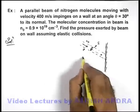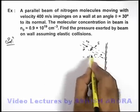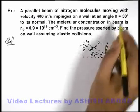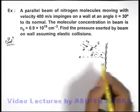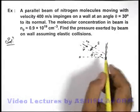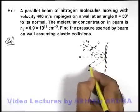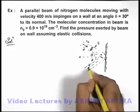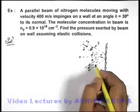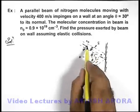In this situation the molecules are striking at an angle 30 degrees, θ equal to 30 degrees with the normal to the wall. And if we consider elastic collision, these all molecules after collision will be reflected at the same angle θ. In this situation we can say that...